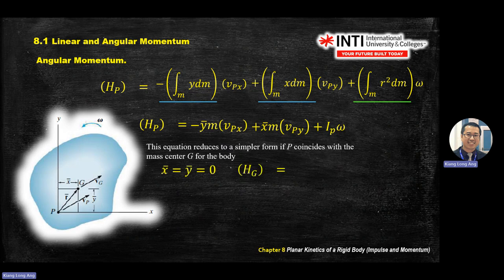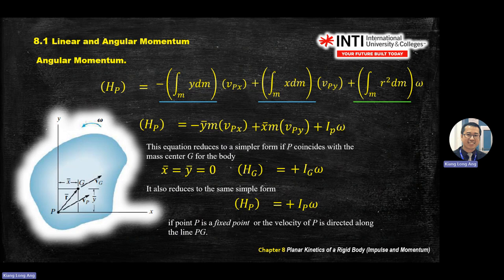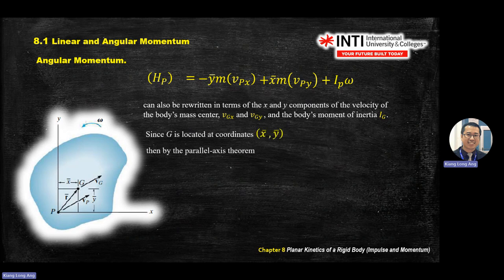Summary for moment of linear momentum (MOM): if you change your reference point to the center of gravity G, your equation becomes the simple form H_G = I_G·ω. How to find I_G? Look it up in the table. This comes from the parallel axis theorem: I_O = I_G + md². I_G is the moment of inertia at the center of mass.